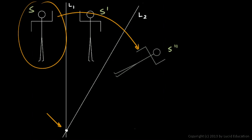I'll say that again. A composite of two reflections across intersecting lines is equivalent to a rotation about the point of intersection.